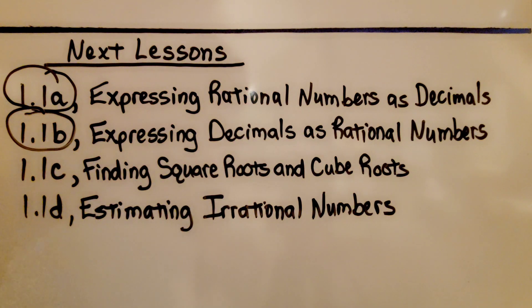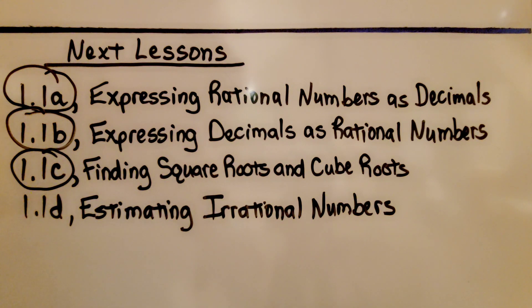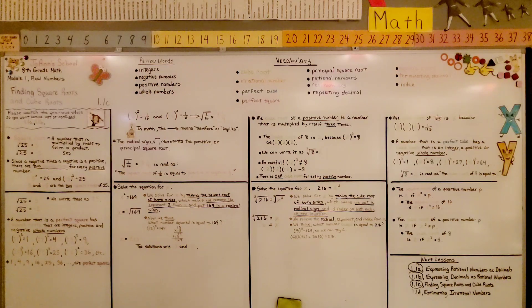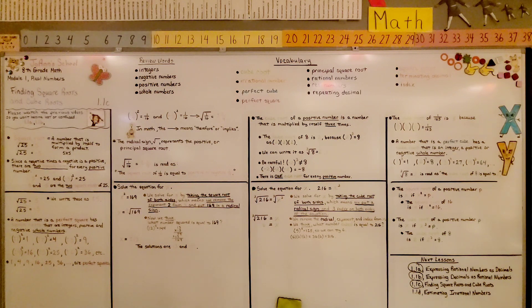We're finished with lesson 1.1c. We're going to move on to the last part of the lesson: estimating irrational numbers. We'll talk about what irrational numbers are if you don't know. I sure hope this all made sense to you — if it did, hit the like button. Please join me for the next part of the lesson. Have a wonderful day.